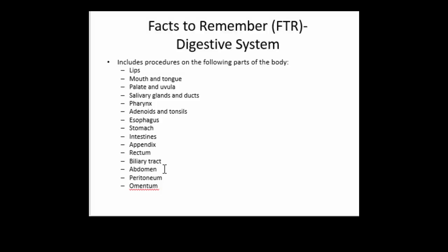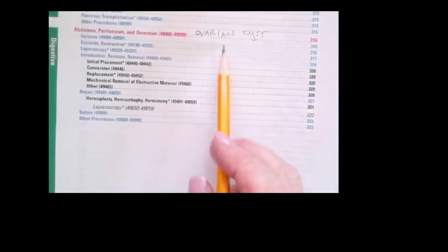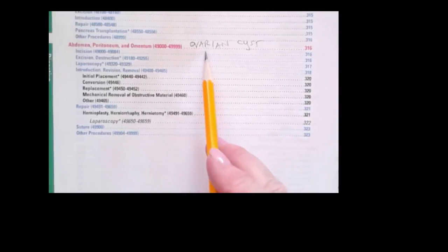I think in my table of contents for this section I will write 'ovarian cyst' beside abdomen just to help us remember. You can see right here where I've written 'ovarian cyst' beside the abdomen, peritoneum, and omentum.